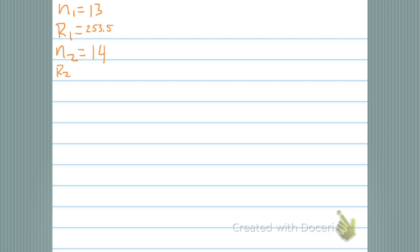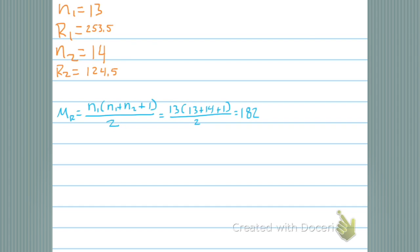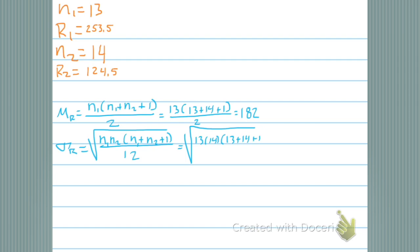I'm just recopying that data. Now I'm on to my third step — I need to get my test statistics. The mean of my R's is n1 times the quantity (n1 plus n2 plus 1) divided by 2. We plug in and chug, and we get 182. That's our expected rank if they were both equal. And then we get the standard deviation of our R: that's the square root of n1 times n2 times the quantity (n1 plus n2 plus 1) all over 12. We plug in and get a standard deviation of 20.61.